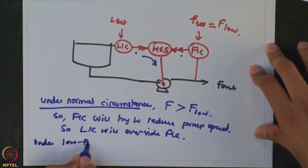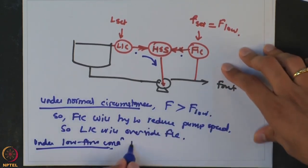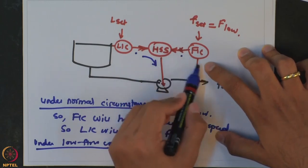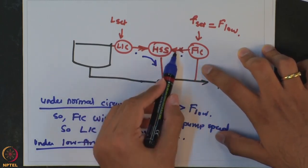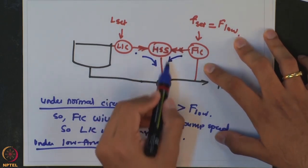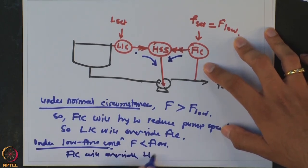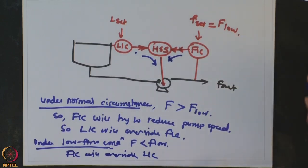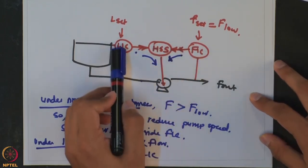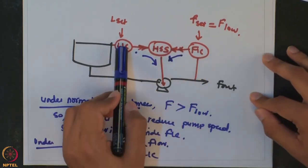Under low flow conditions, when flow drops below F_low, the flow controller output tries to increase pump speed — giving a higher value that the high selector picks up. FIC overrides LIC, preventing cavitation of the pump. By using this high selector switch, we are able to control both level and flow at or above their respective safe values.